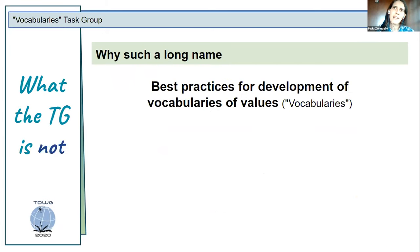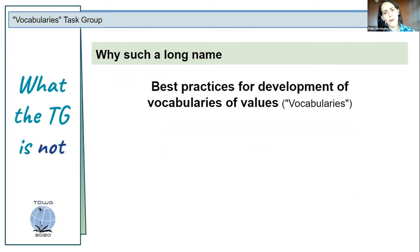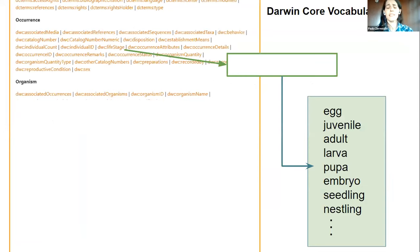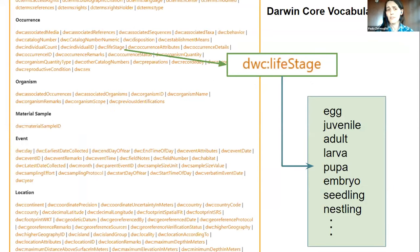To introduce that, let me refer to the title of this task group: 'Best Practices for Development of Vocabularies of Values.' Starting with the latter part — vocabularies of values. As a reminder, a vocabulary is a collection of standardized terms and their definitions. Darwin Core itself is a vocabulary — all the terms found in Darwin Core constitute a vocabulary. But we're not talking about those terms; we're talking about the values used to fill in those Darwin Core terms, as if in a spreadsheet.